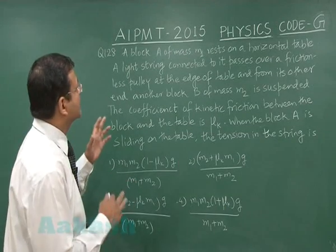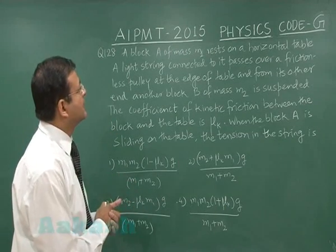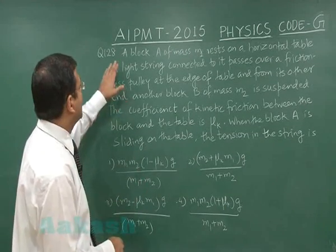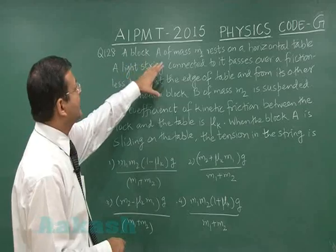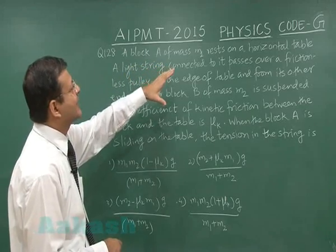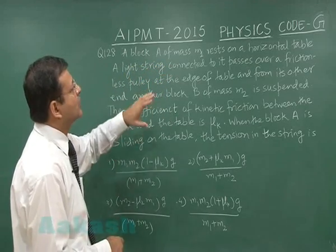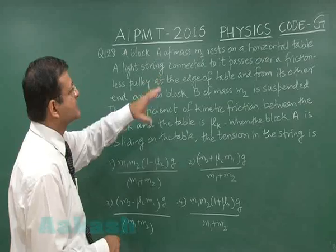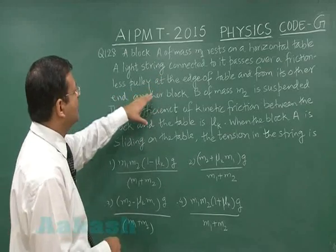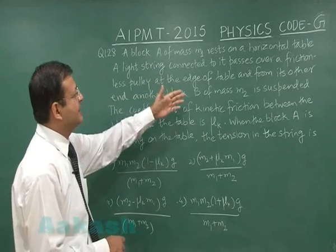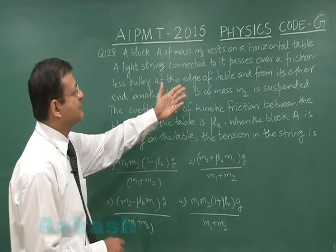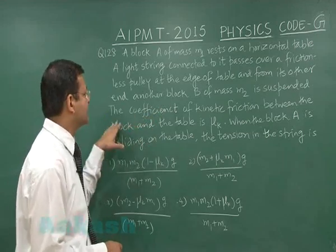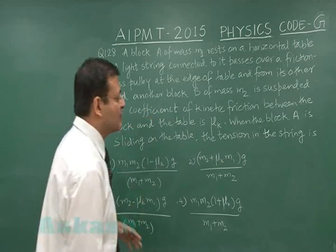This is once again a question of connected motion. There is a block A of mass M1 resting on a horizontal table. A light string connected to it passes over a frictionless pulley at the edge of the table, and from its other end another block B of mass M2 is suspended.